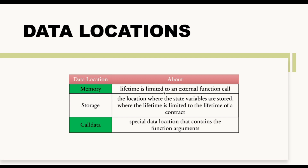The lifetime of memory is limited to an external function call — it is limited to a function only. Calldata is also a special data location that contains the function arguments. One important thing to understand clearly is that all of these — memory, storage, and calldata — are memory areas, meaning these are areas where we are actually storing our variables. This confuses a lot of students. At the end of the day they are just memory areas or storage areas where you are storing your variables, specifically for reference data types like arrays, structs, mappings, and strings.